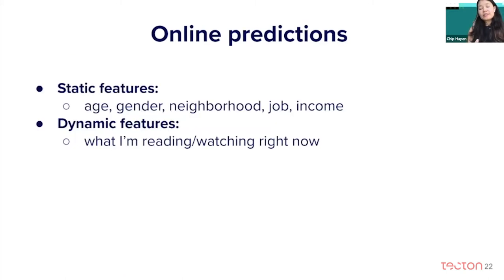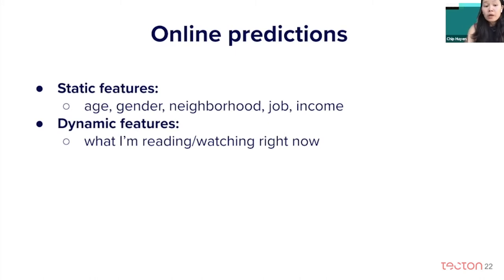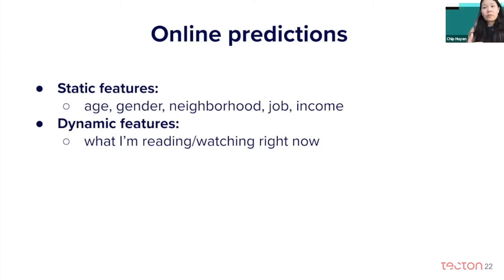Online predictions can help you overcome these drawbacks. Online predictions also allow you to use dynamic features. Static features are features that don't change or don't change very often, such as age, gender, neighborhood, job, or income. Whereas dynamic features are those that can change very quickly — for example, what am I reading right now, or what am I watching right now. What you are currently reading or watching is very important to predict what you want to watch or read next.